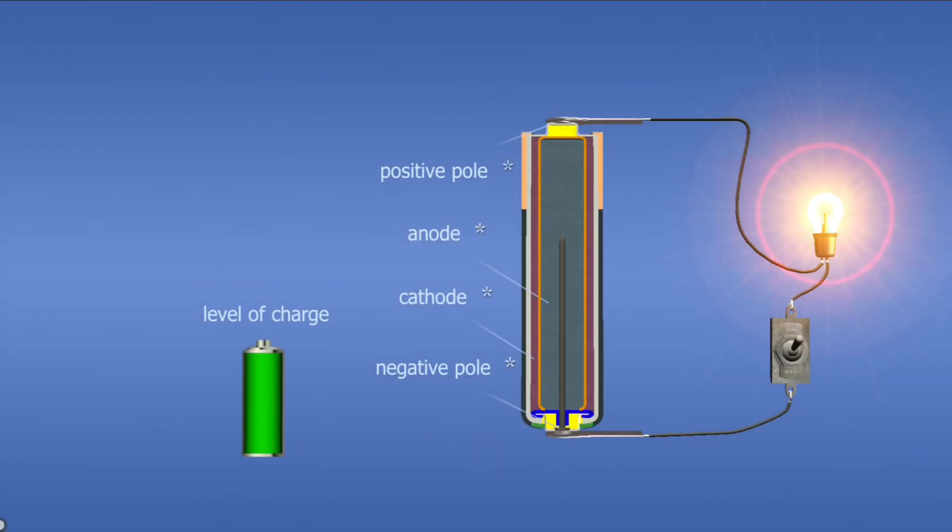The two main components of a battery are the anode and the cathode. Electrons are released by the anode. They enter the circuit and migrate to the cathode.